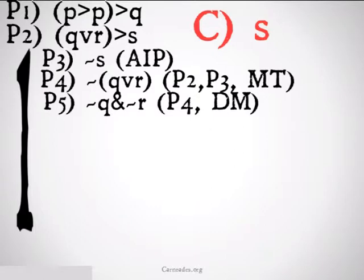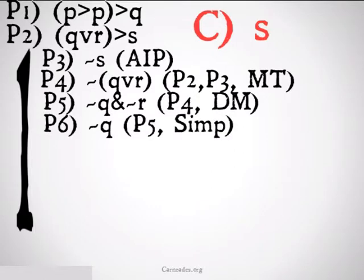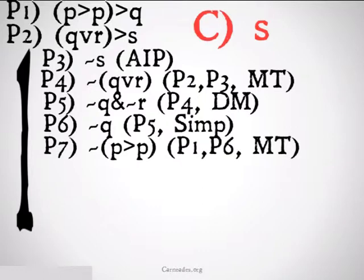De Morgan's rule lets us get not Q and not R, which we can simplify down to just not Q — 5 simplification. Then we can once again use modus tollens to get it's not the case that P implies P, from 1 and 6 modus tollens. If you know anything about tautologies, you know that this is not going to end well for our assumption of not S, because P implies P is a tautology and the denial of it will lead to a contradiction.